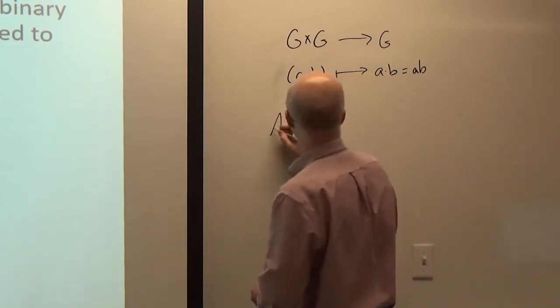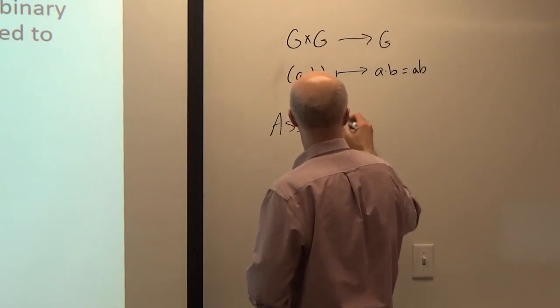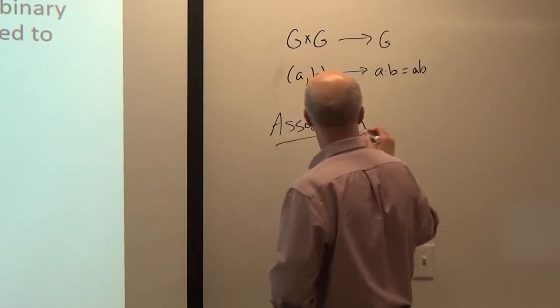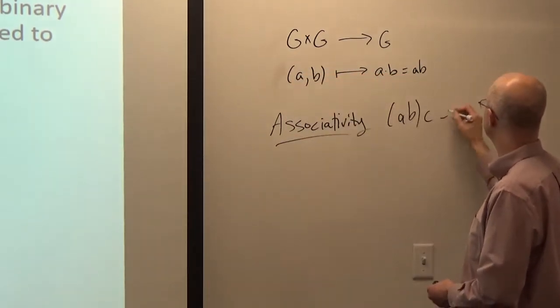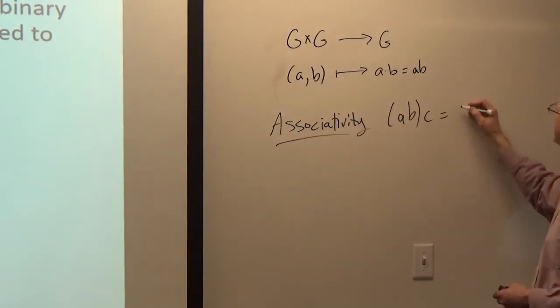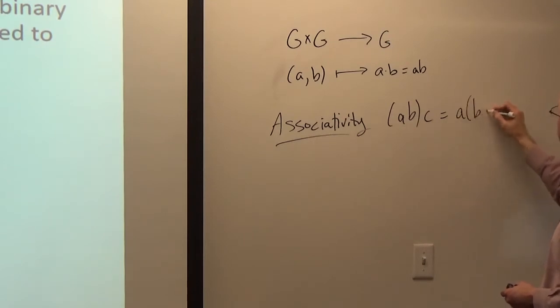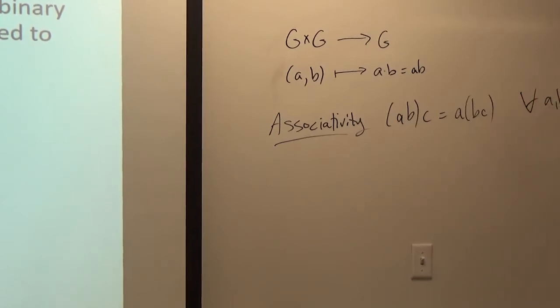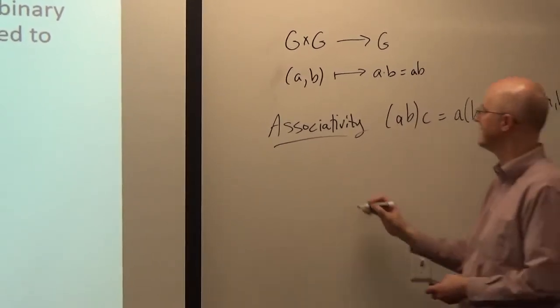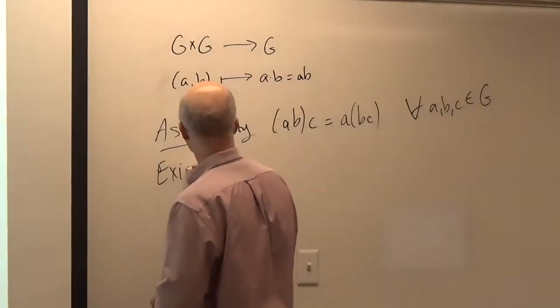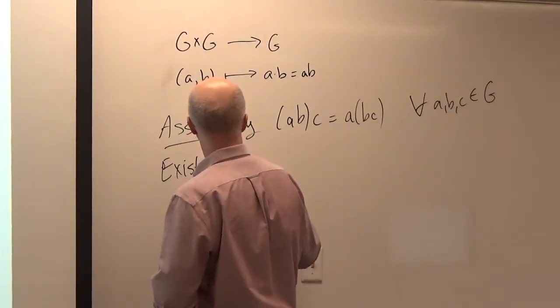Associativity means it doesn't matter where you put the parentheses. a times b times c, meaning do a times b first, and then times c equals this, where you do b times c first, and then left multiply by a. So that's associativity. What's the next property? Identity? Yeah. The existence of an identity.